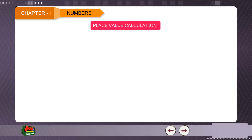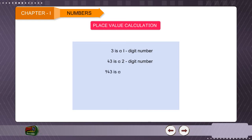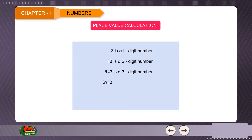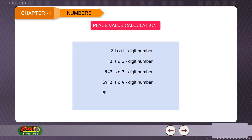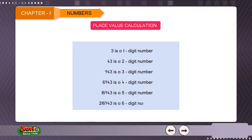Place value calculation. 3 is a 1-digit number, 43 is a 2-digit number, 943 is a 3-digit number, 6,943 is a 4-digit number, 16,943 is a 5-digit number, and 2,16,943 is a 6-digit number.